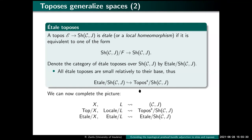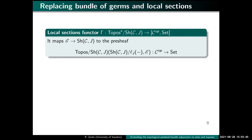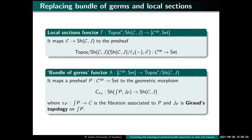This completes the picture: our topological space becomes a site; bundles over the space become relatively small toposes; étale bundles become étale toposes. Now, to define the adjunction, the local sections functor at this point is straightforward — it is the generalization of what we have in the topological case. Given an essentially small topos E over Sh(CJ), we consider its image via gamma to be this pre-sheaf: the local sections of E at the elements of C. We know these are sets because E is small relative to the base topos.